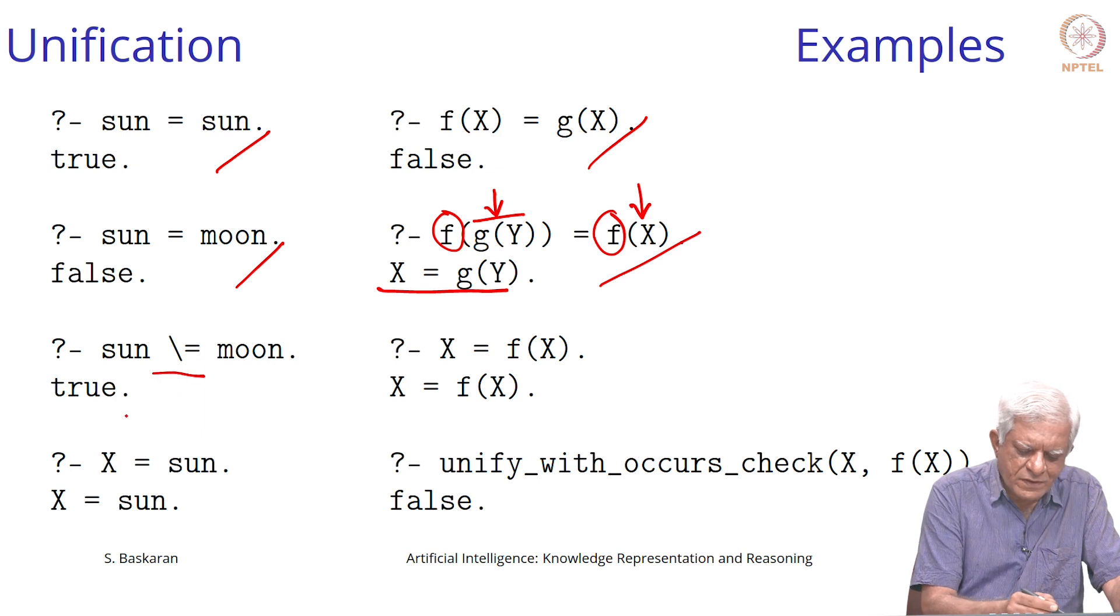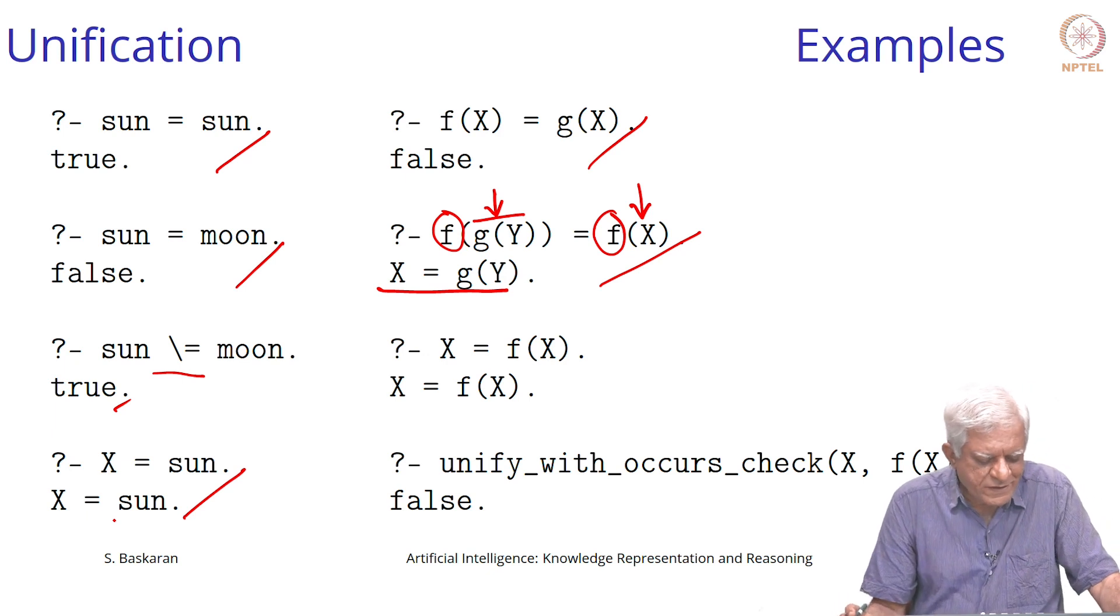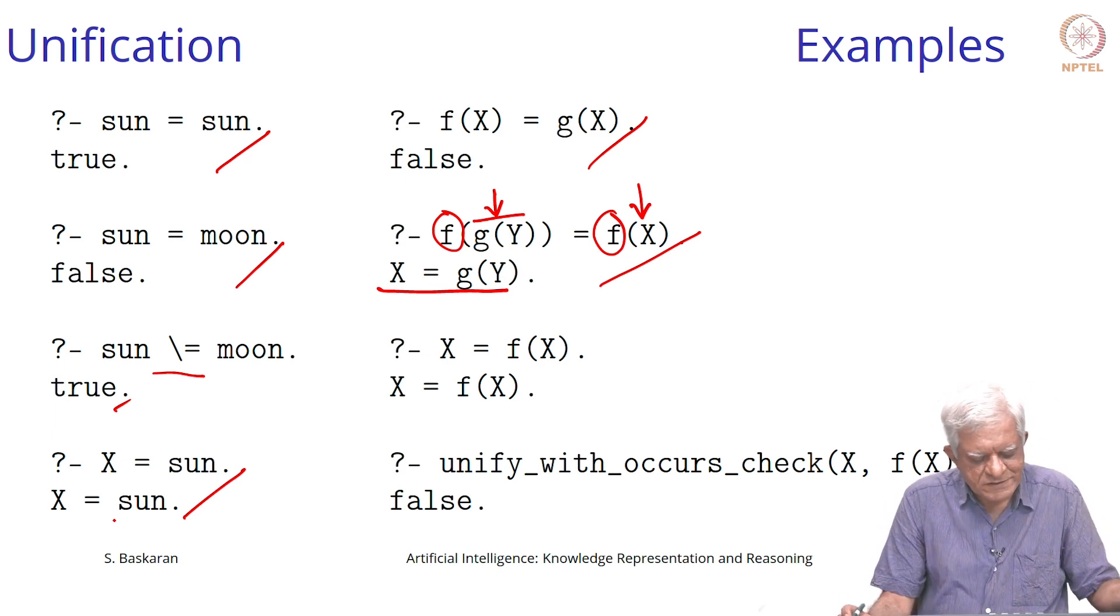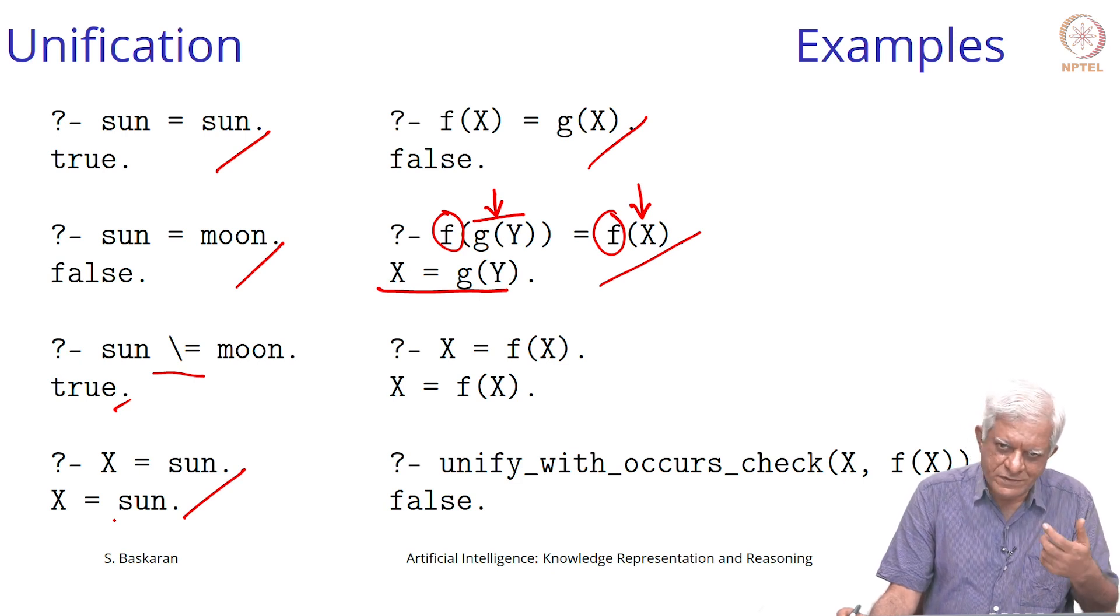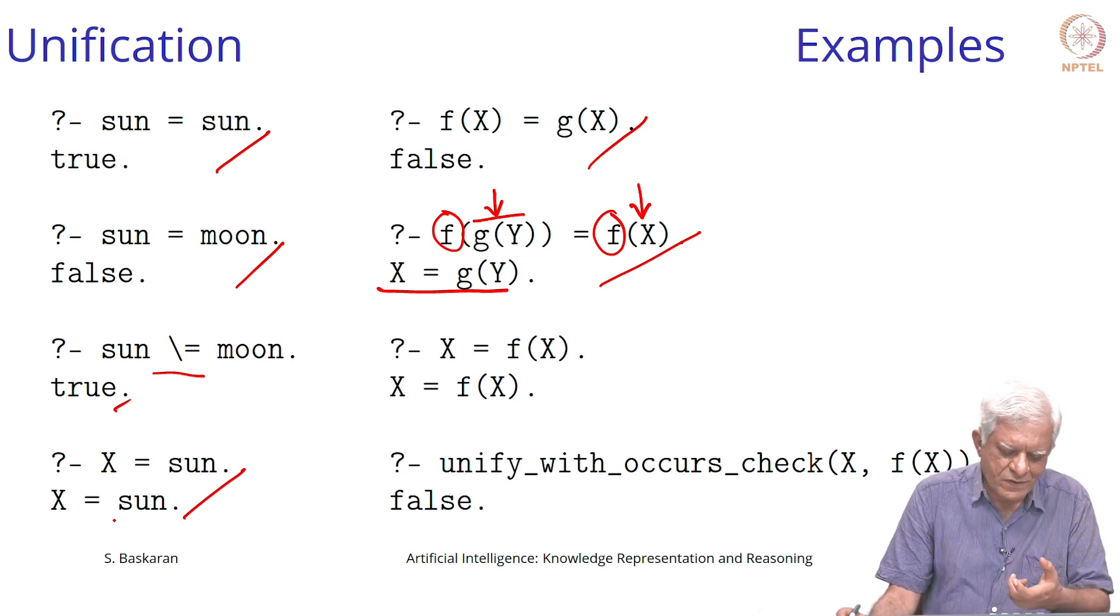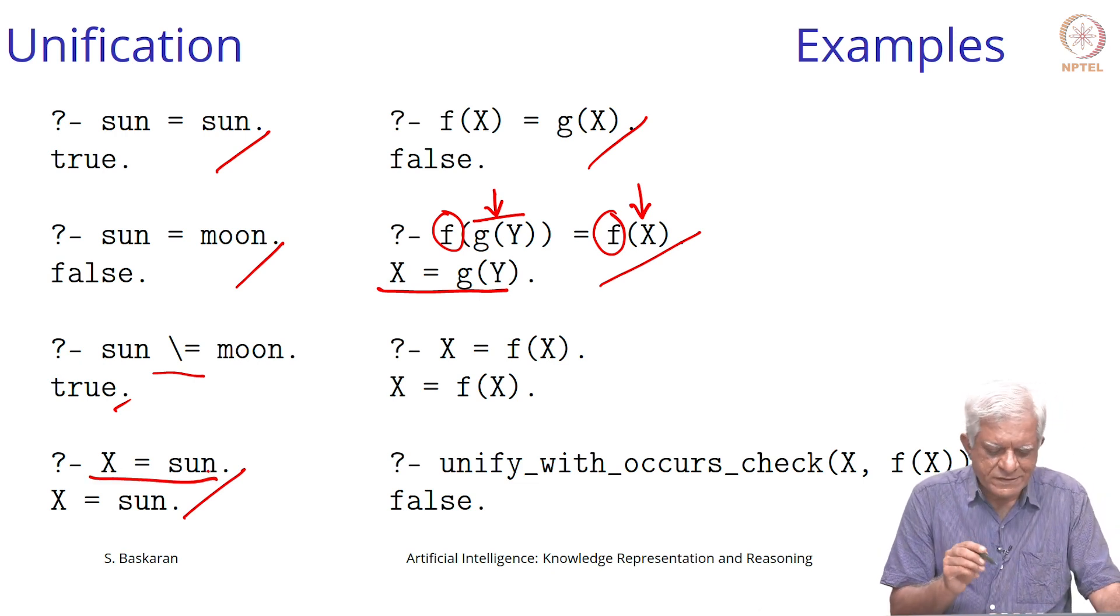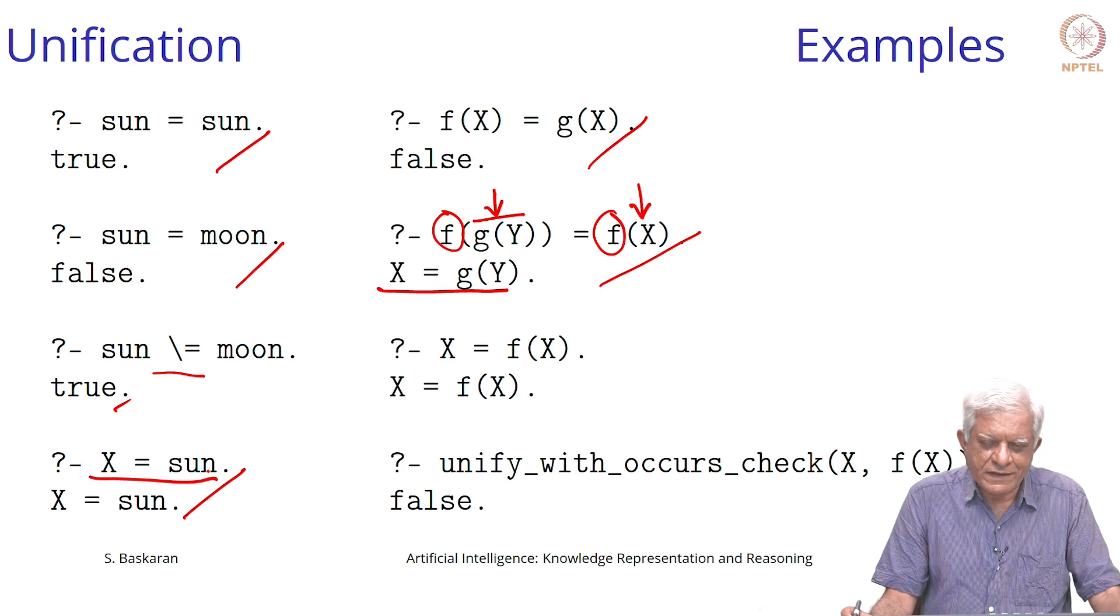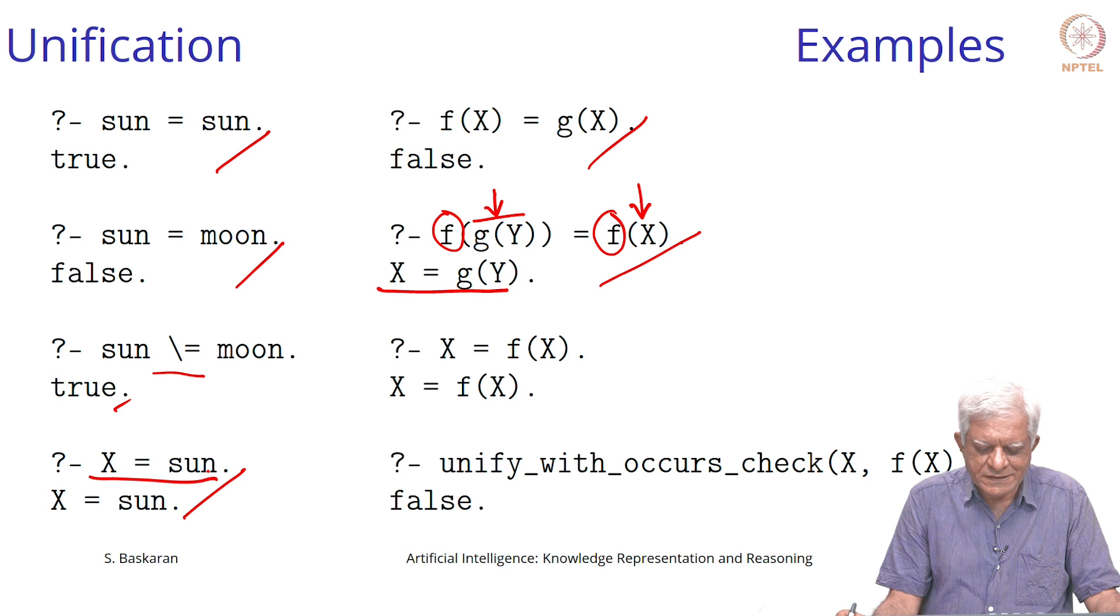If you say sun is not equal to moon, it will say true. If you ask is x equal to sun, it will say x equal to sun. The second one is the answer, that is the substitution that Prolog has found. The first one is a query. The answer is yes, if x equal to sun then it will become equal to the term sun.